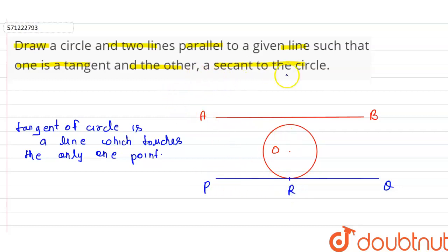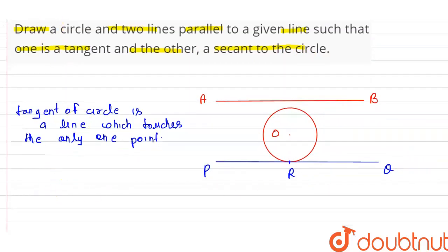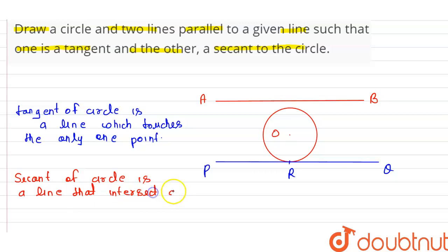What is the secant of a circle? Secant of a circle is a line that intersects the circle at a minimum of two points.